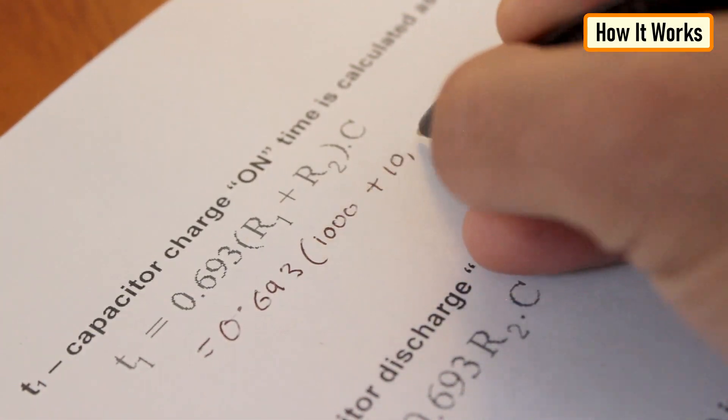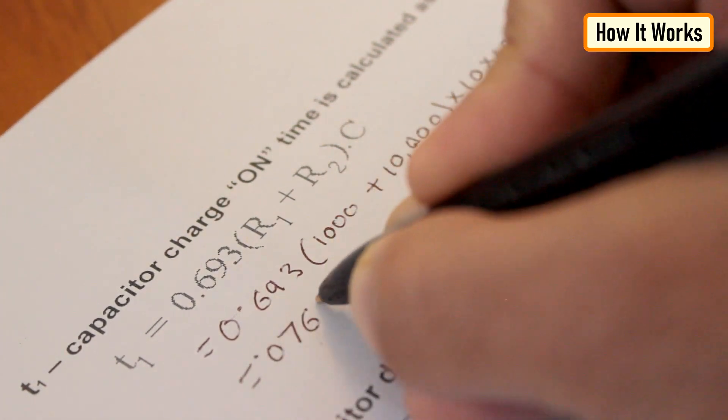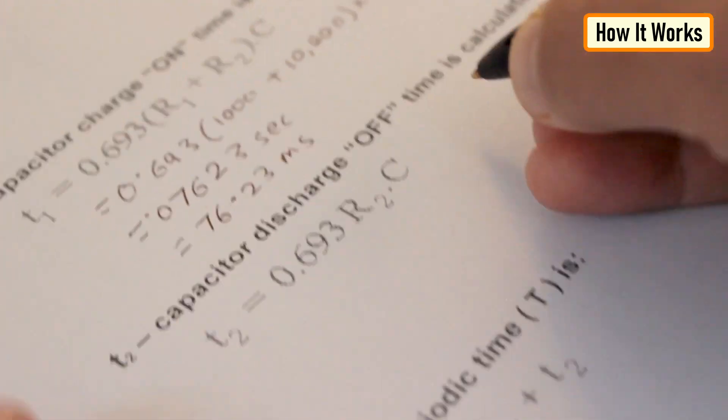Let's first calculate the value of T1 or the capacitor charge on time which is 0.693 times R1 plus R2 into C3. Putting the values together, we get 76.23 milliseconds.